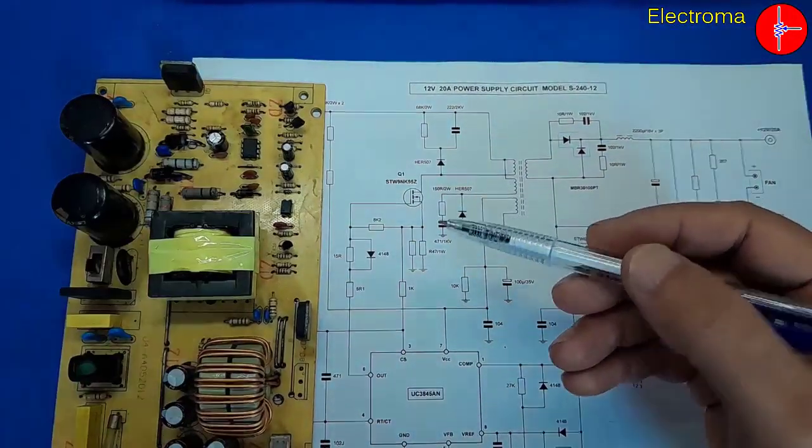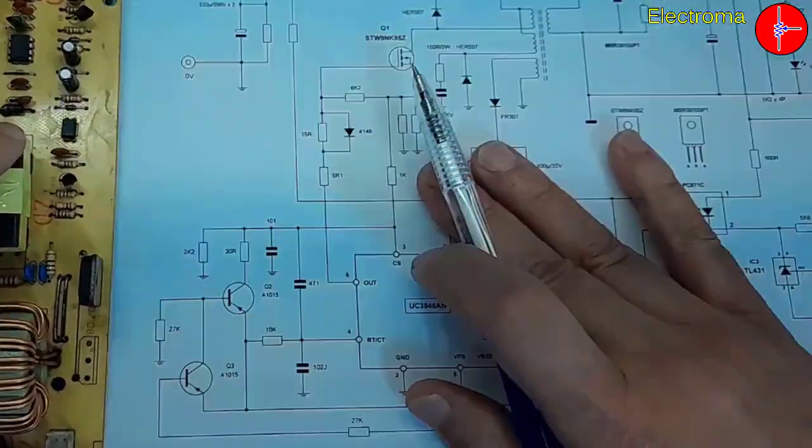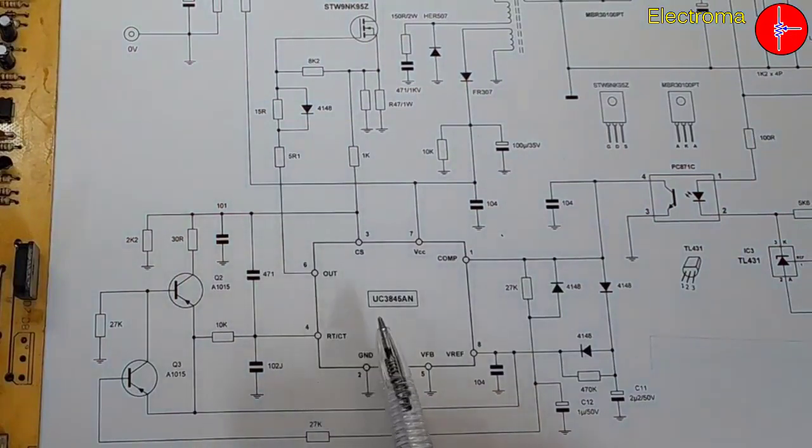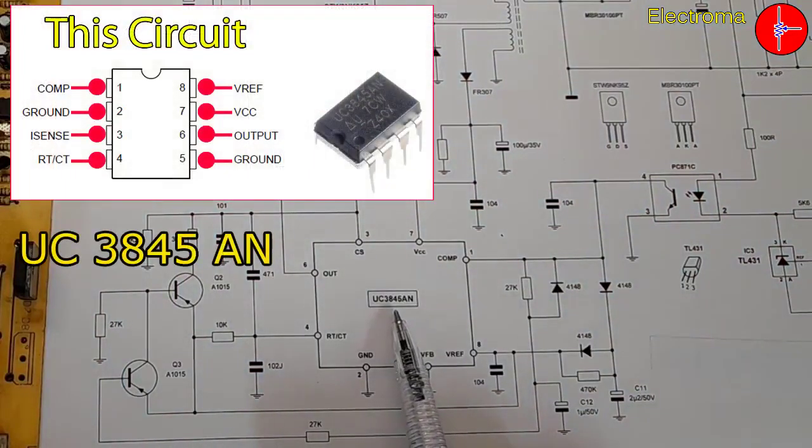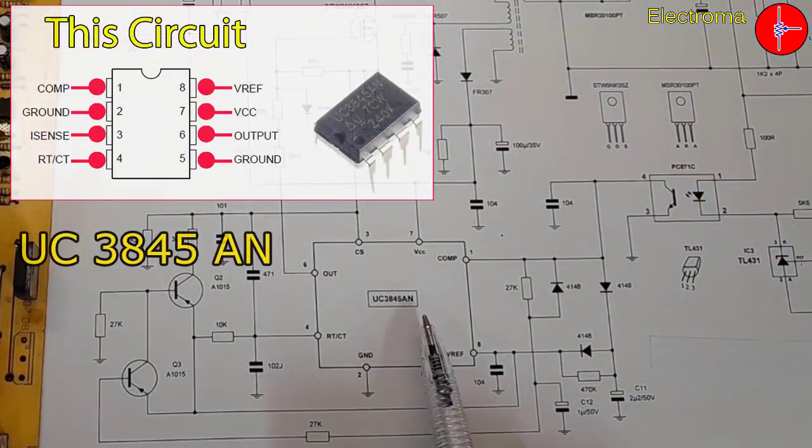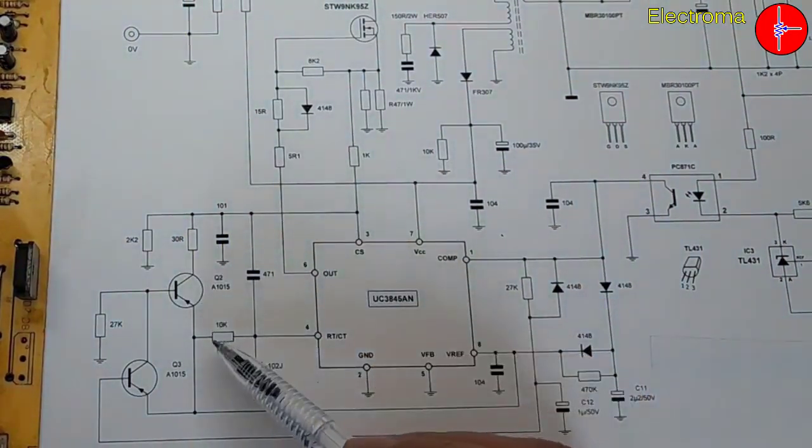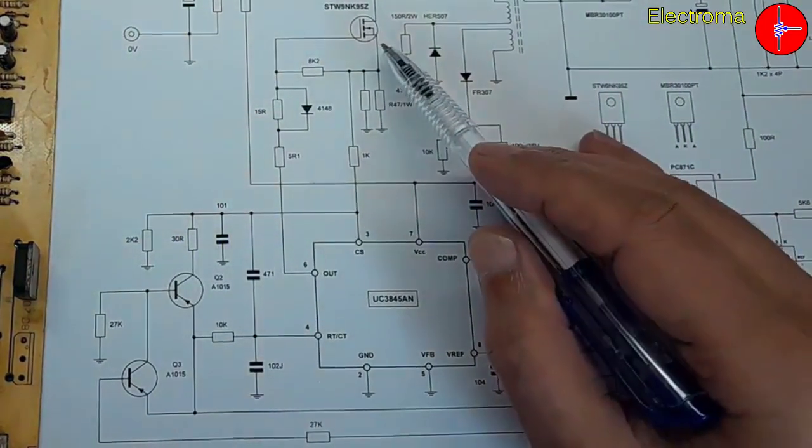The second point is about these two PNP transistors. The IC used in this circuit is UC3845AN. The job of these transistors is to prevent high current and protect the MOSFET. It is the same as the protection circuit.